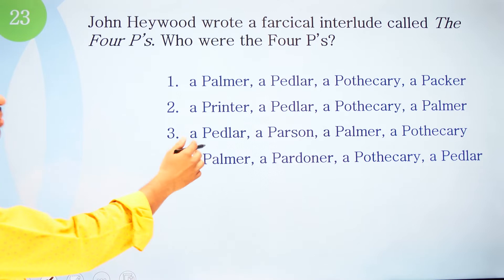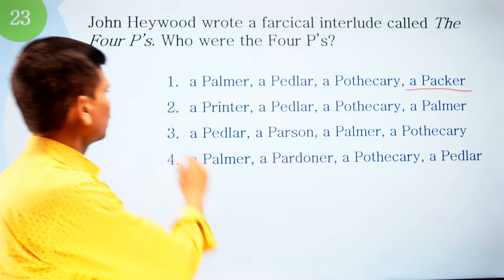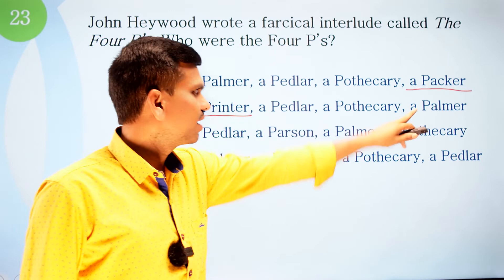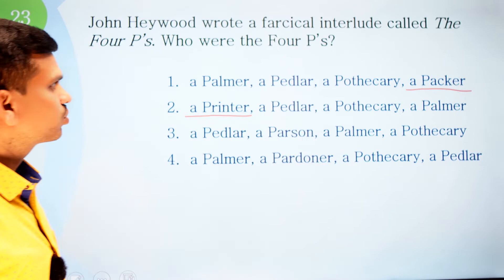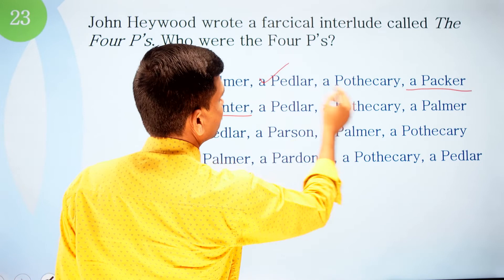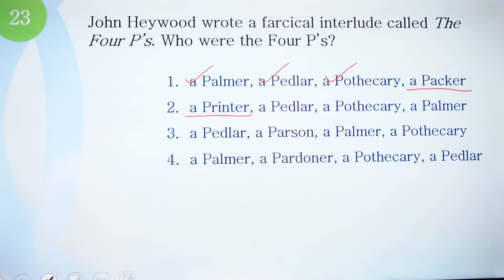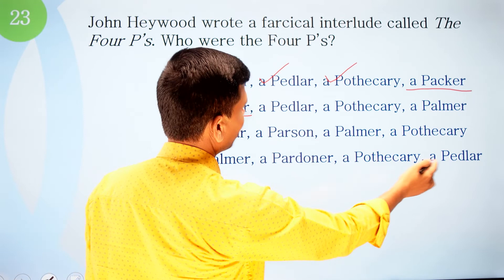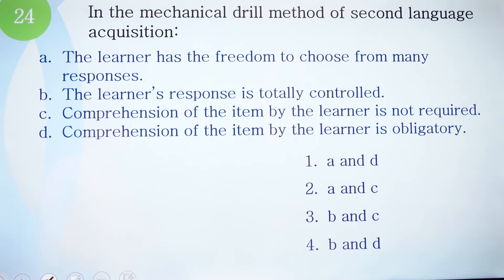Question twenty-three: John Heywood wrote a farcical interlude called 'The Four P's.' Who were the four P's? Option one: Palmer, Peddler, Pothecary, Packer — no Packer. Option two: Printer, Peddler, Pothecary, Palmer — Printer is not correct. Option three: Peddler, Parson, Palmer, Pothecary. Option four: Palmer, Pardoner, Pothecary, and Peddler. The correct answer is number four — a Palmer, a Pardoner, a Pothecary, and a Peddler.